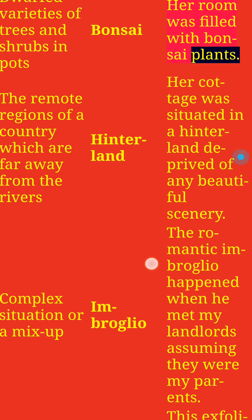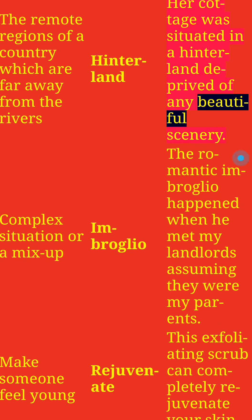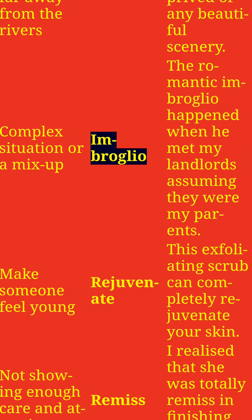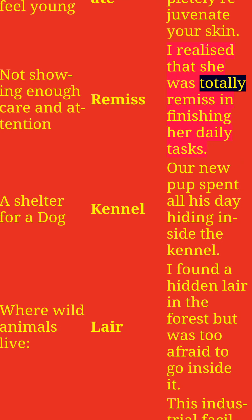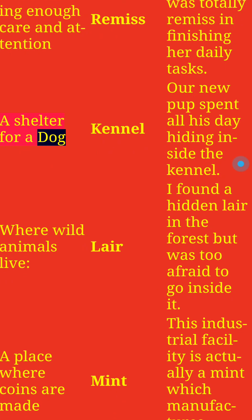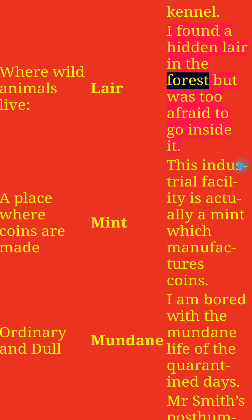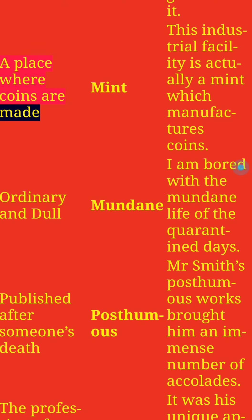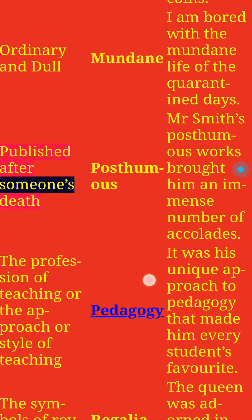The remote regions of a country far away from the rivers: Hinterland. Her cottage was situated in a hinterland deprived of any beautiful scenery. Complex situation or a mix-up: Imbroglio. The romantic imbroglio happened when he met my landlords assuming they were my parents. Make someone feel young: Rejuvenate. This exfoliating scrub can completely rejuvenate your skin. Not showing enough care and attention: Remiss. I realized that she was totally remiss in finishing her daily tasks.